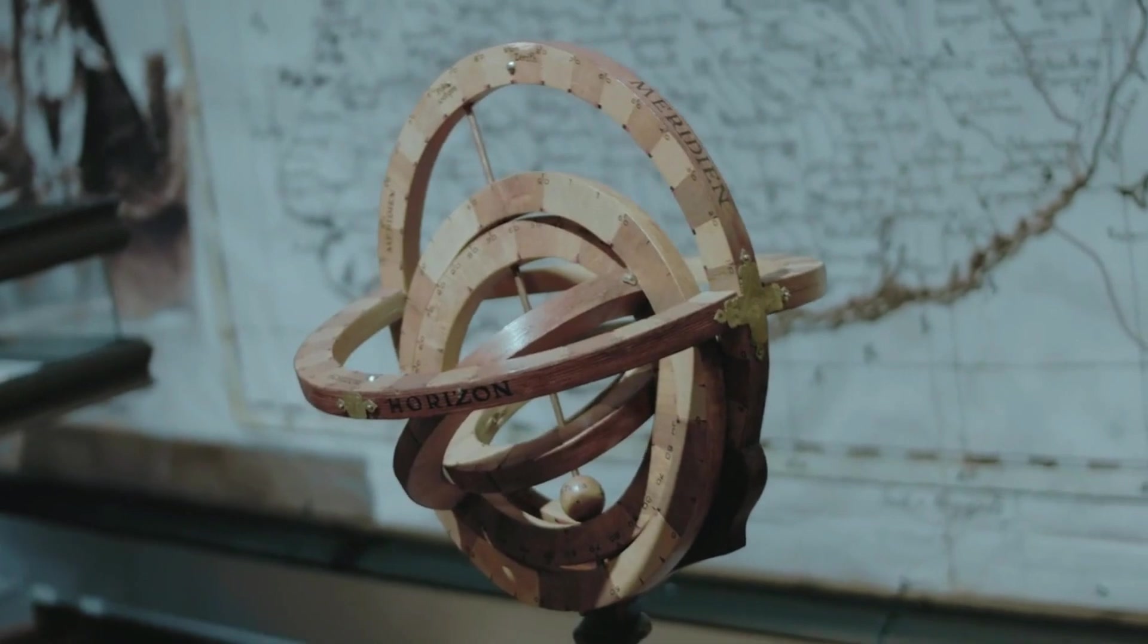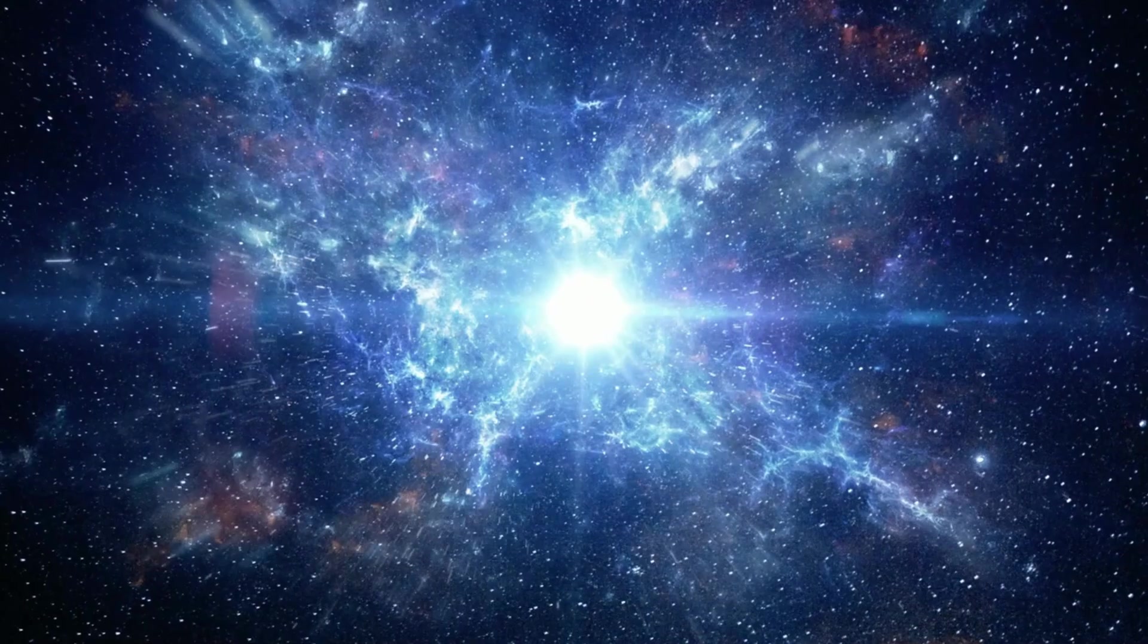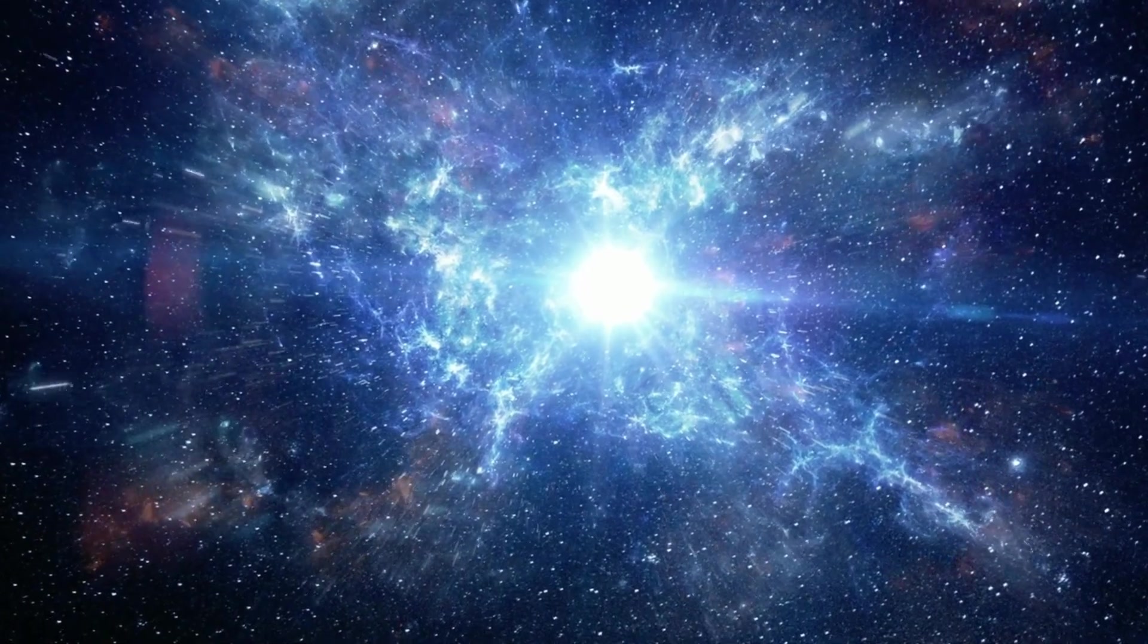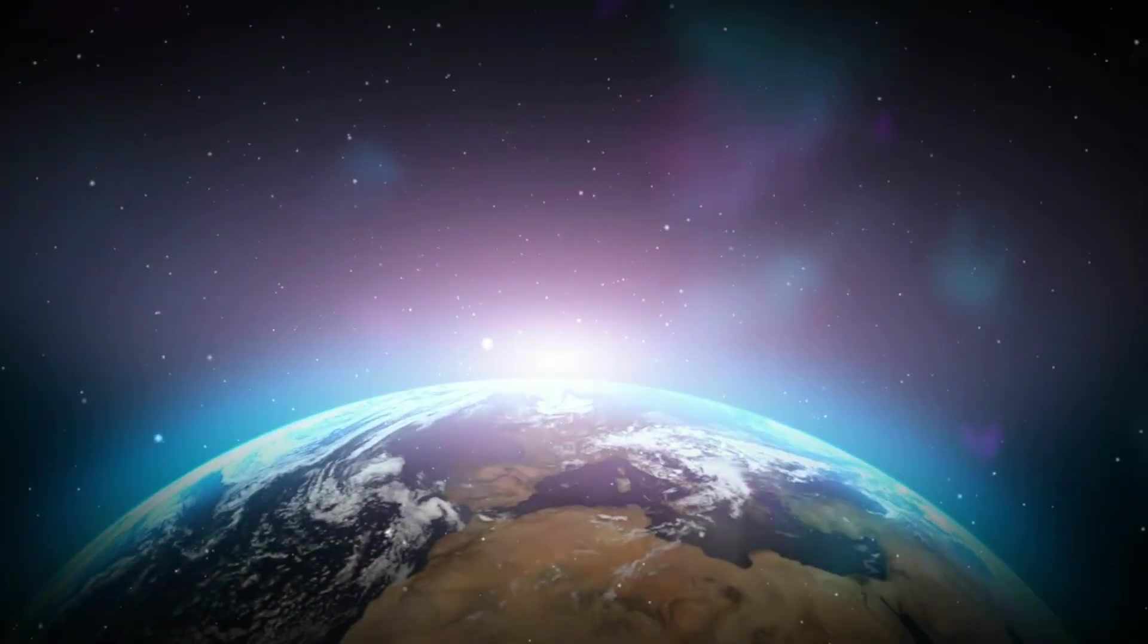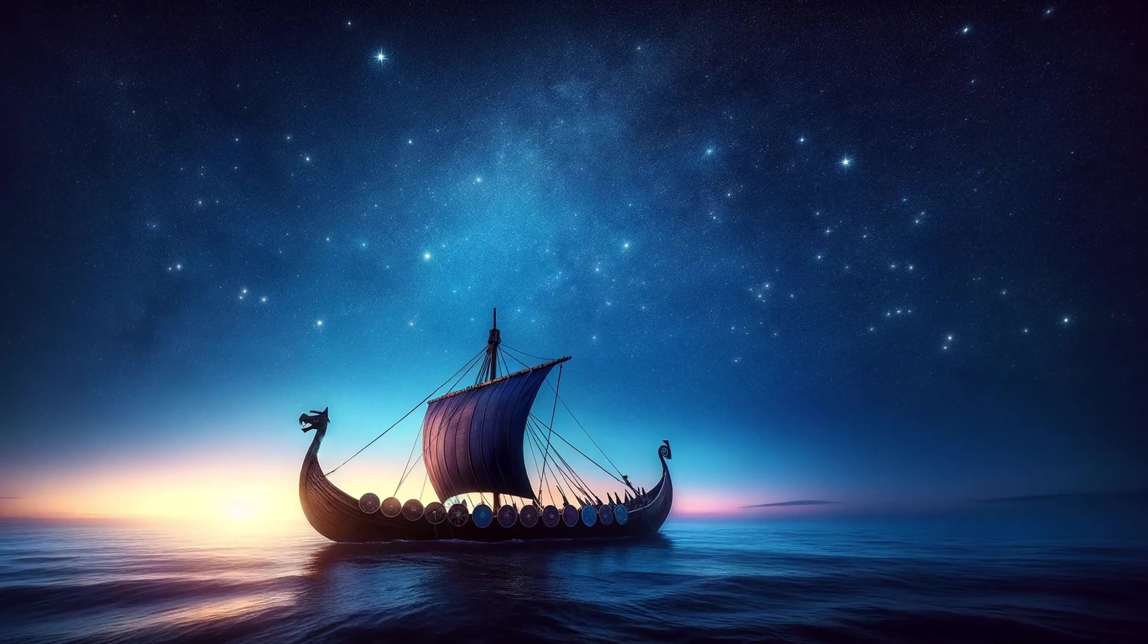Of course, the celestial sphere is a purely abstract concept because the sphere does not exist and the objects visible in the sky are at very different distances. But this concept is very convenient because it helps, for example, in determining coordinates in the sky.